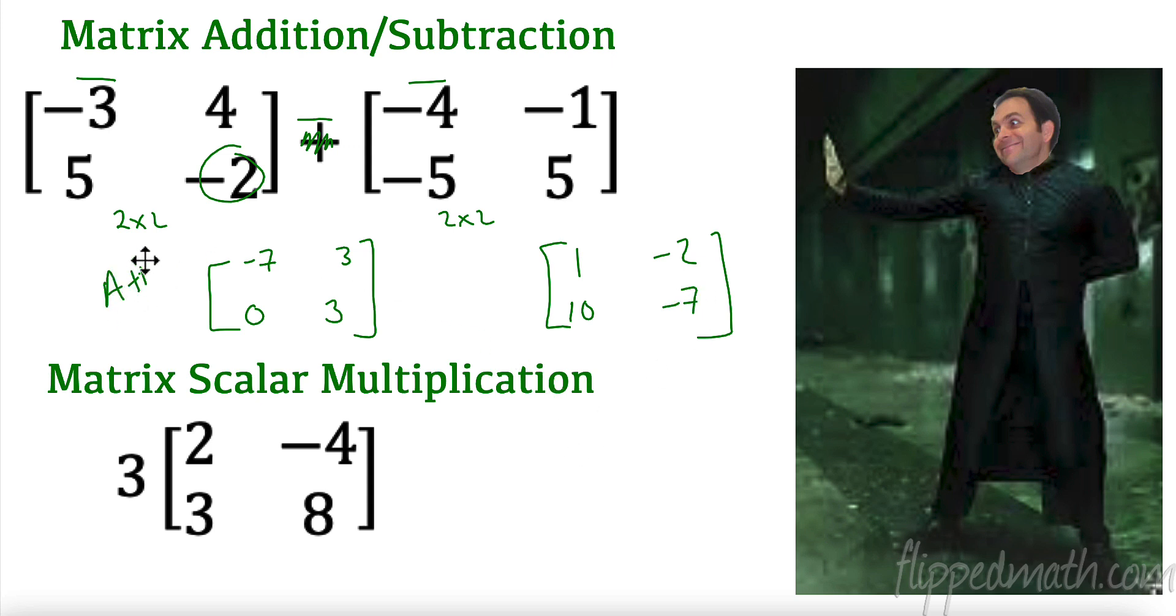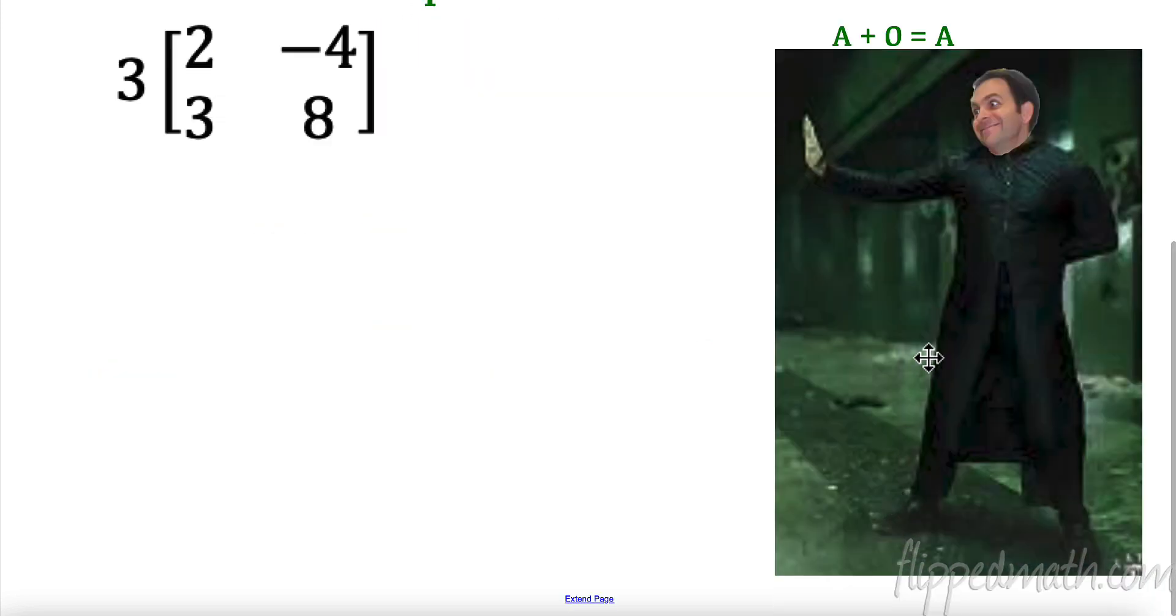So this would be A plus B if I was adding. This would be A minus B. And often you'll see matrices referred to by capital letters. So if this is matrix A, this is matrix B, we can add them together. Alright. Now, side note. Alright, side note over here. Sorry about that.